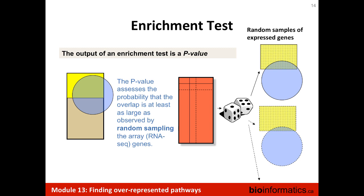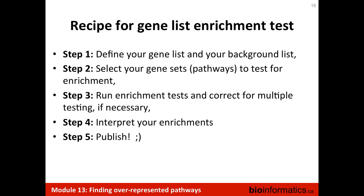How often would you see such a result if the data were randomly generated? So this is a recipe for high-impact publications: define your gene list and background list, select the gene sets you want to test for enrichment, run the necessary enrichment tests, correct for multiple testing always, then interpret your enrichment, find out the new mechanism, and publish.